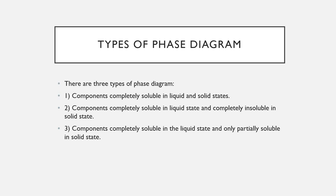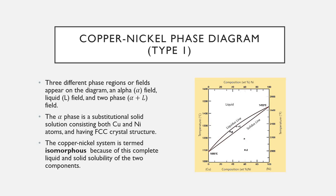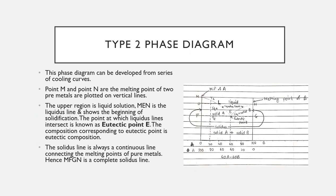Types of phase diagrams: there are three types. Type 1: components completely soluble in both liquid and solid state — the copper-nickel phase diagram is Type 1, and the system is termed isomorphous because of complete liquid and solid solubility of the two components. Type 2: components completely soluble in the liquid state and completely insoluble in the solid state. Type 3: components completely soluble in liquid state and only partially soluble in the solid state.